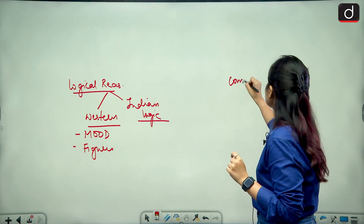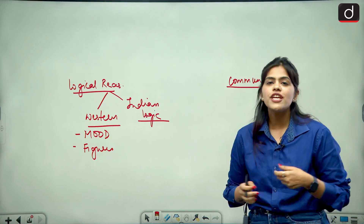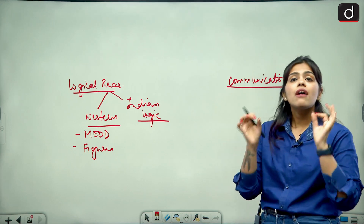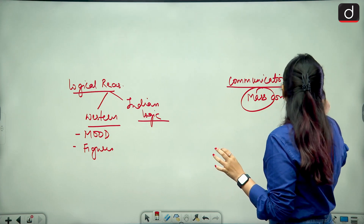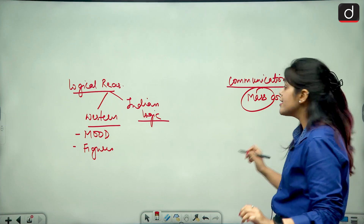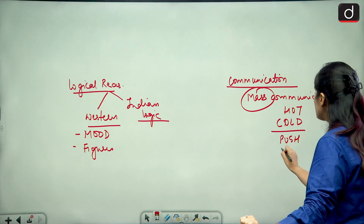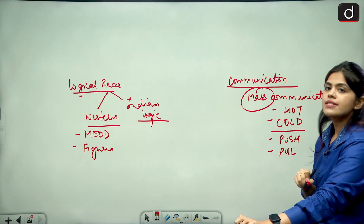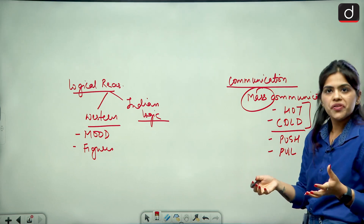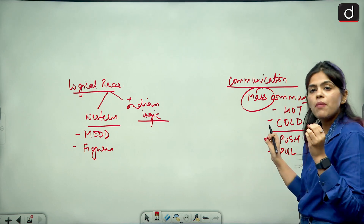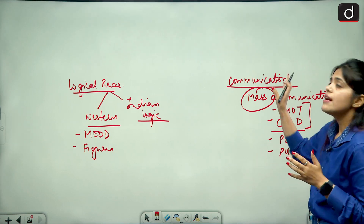Then comes Communication. People usually study general communication topics — types of communication, barriers to communication. But now the paper is fully dedicated to mass communication-related questions. They ask questions related to media like hot media and cold media, push media and pull media. Marshall McLuhan and other theorists are important. You need to study mass communication in greater detail — theories like gatekeeping and agenda setting are all very important in communication.